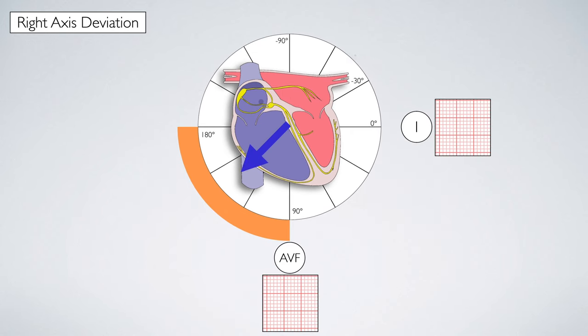In this scenario, the electrical activity moves away from lead one, making the QRS complex negative, and moves towards lead AVF, resulting in a positive QRS complex.